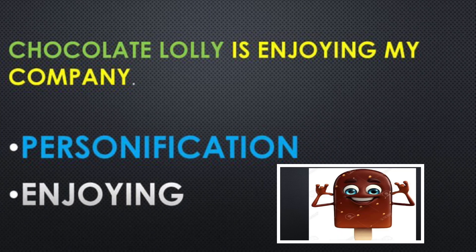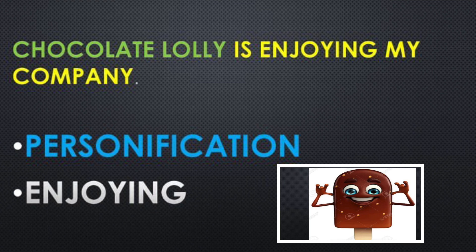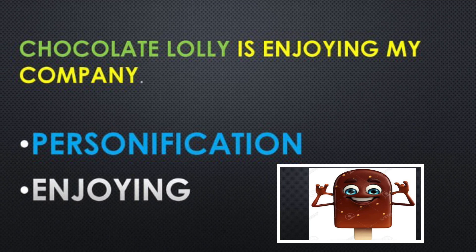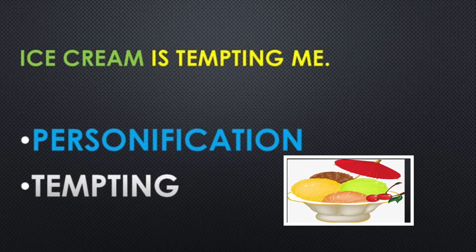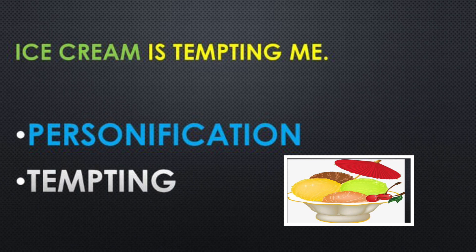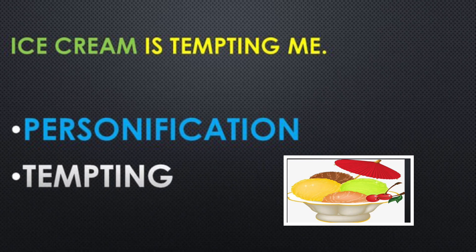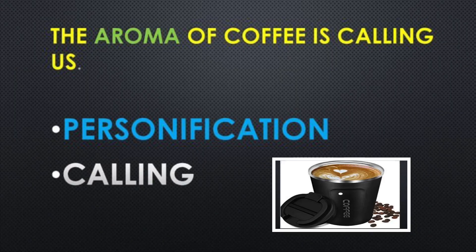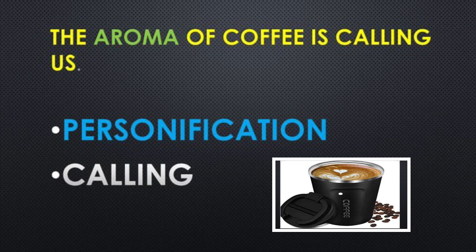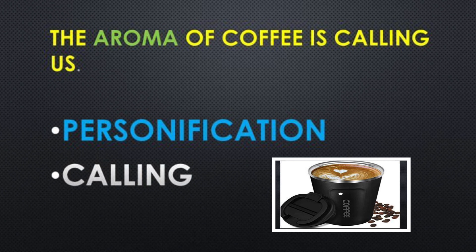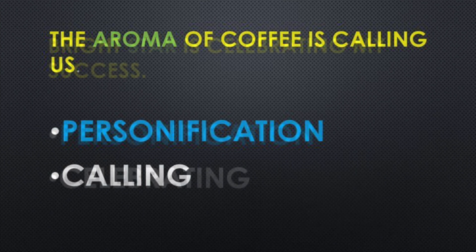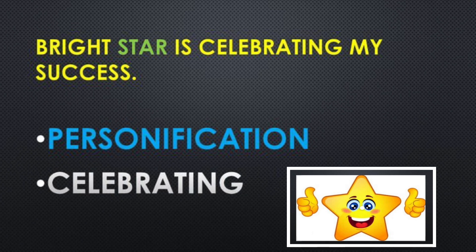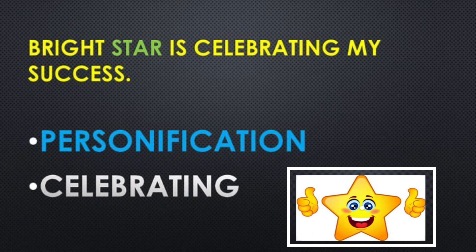'Chocolate lolly is enjoying my company.' Chocolate mere saath reh ke khush hai. 'Ice cream is tempting me' — ice cream mujhe tempt kar rahi hai, mujhe apni taraf bula rahi hai. How is it possible? It means literary device — personification. 'The aroma of coffee is calling us' — coffee ki khushbu hume bula rahi hai. Again, the same device. 'Bright star is celebrating my success' — star inanimate object hai, aur 'celebrating' human quality is ko dhe di gayi — personification.